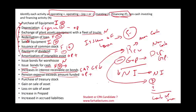Purchase of treasury stock — you bought back your own stock. That's the opposite of issuance of stock. So it's financing and it's minus. You are buying back your own stock.